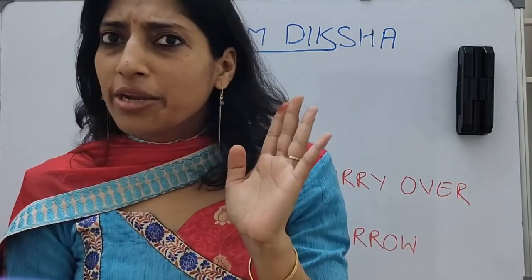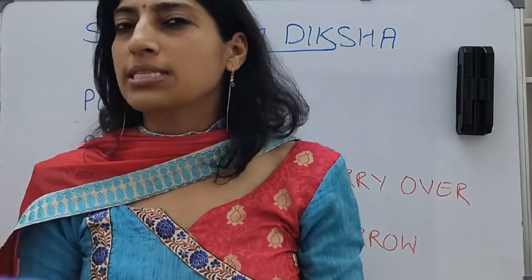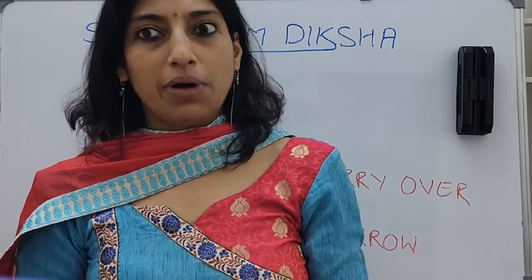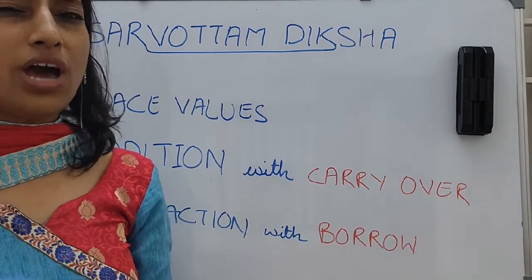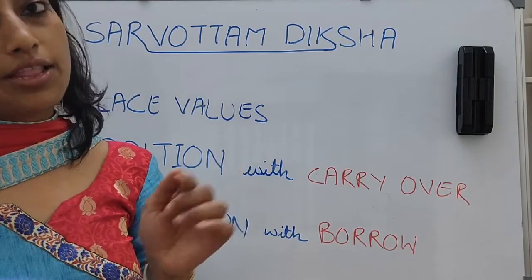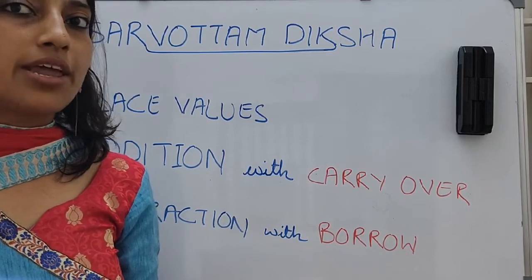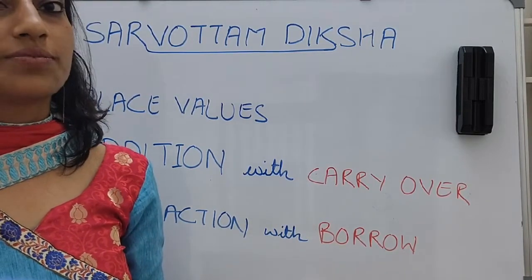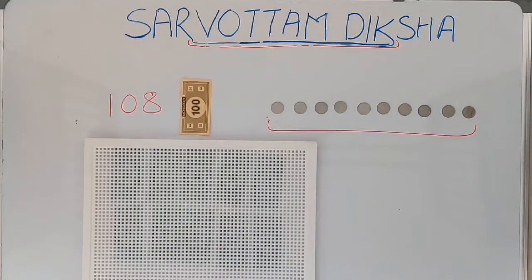Namaste, hi my dear 'metholics' — we are metholics because we are addicted to maths! Let's continue with Part 2 of place values: addition with carry over and subtraction with borrow. If you have some confusion, please have a look at my previous video Part 1, the link of which is in the description box. Let's go through some examples of addition and subtraction to understand carry over and borrow.